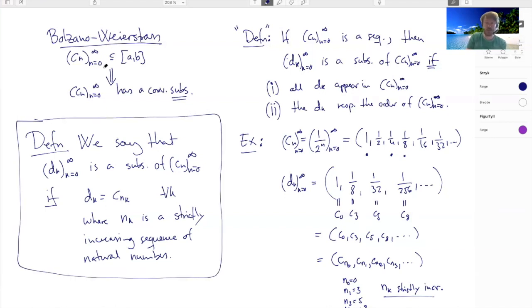What is the Bolzano-Weierstrass theorem saying? It's saying that for any sequence in a bounded and closed interval, there exists a sequence Nk of strictly increasing natural numbers such that the sequence Cnk converges. That's the point.